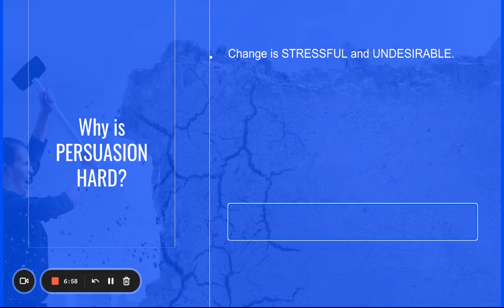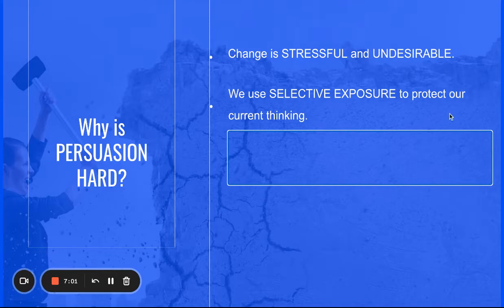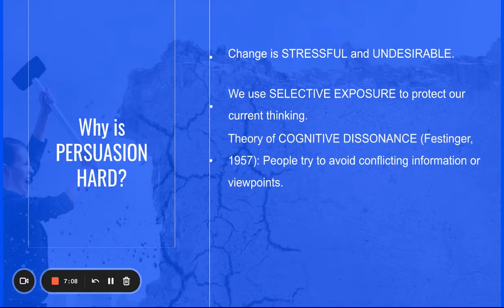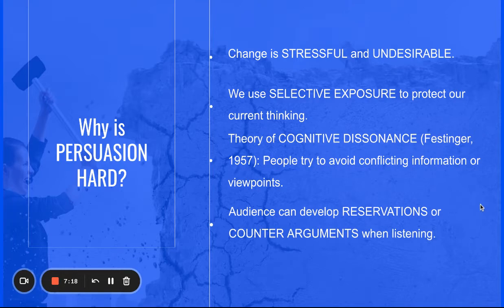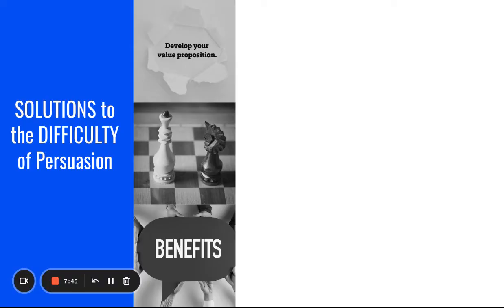Why is persuasion hard? Change is stressful and undesirable. We use selective exposure to protect our current thinking — if we don't agree with something, we just shut down and don't want to listen. The theory of cognitive dissonance means we avoid conflicting information or viewpoints. Audiences also hold reservations and counter-arguments when listening. When you're presenting, they are raising those counter-arguments in their heads, so your speech must be thorough enough to address opposing viewpoints.